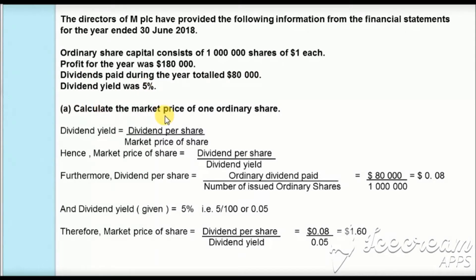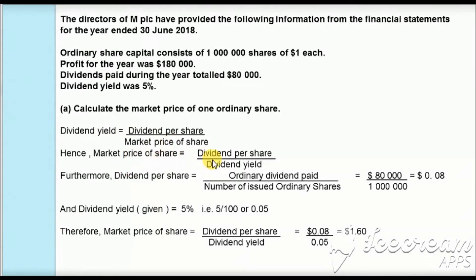In the first part of the question, we are asked to calculate the market price of one ordinary share. The information given is dividend yield. The formula is: dividend yield equals dividend per share divided by market price of the share. Rearranging, the market price of one share equals dividend per share divided by dividend yield.